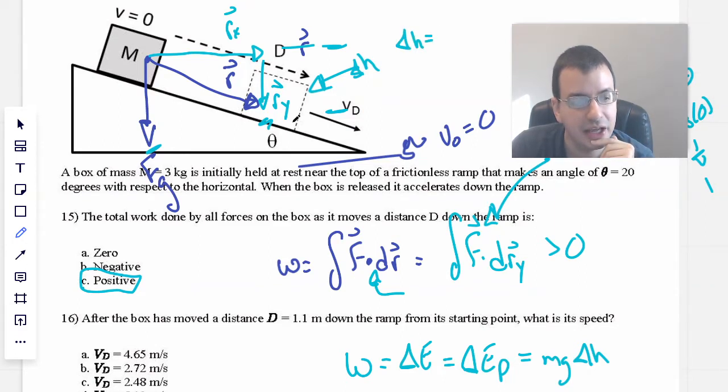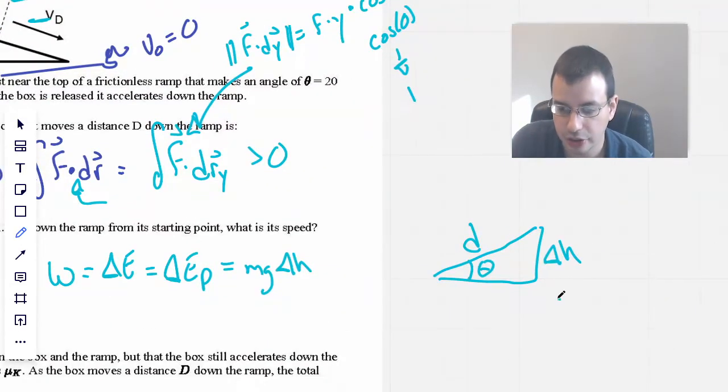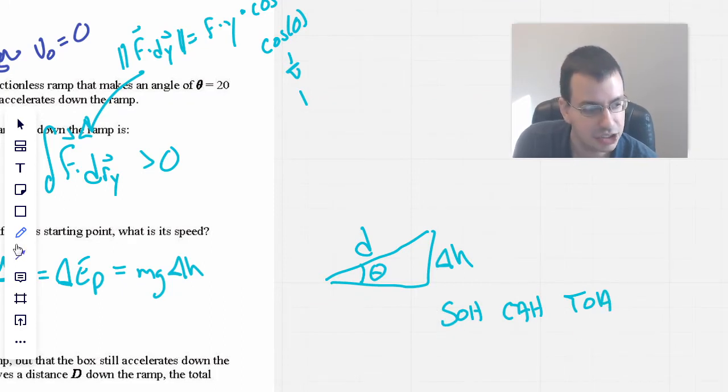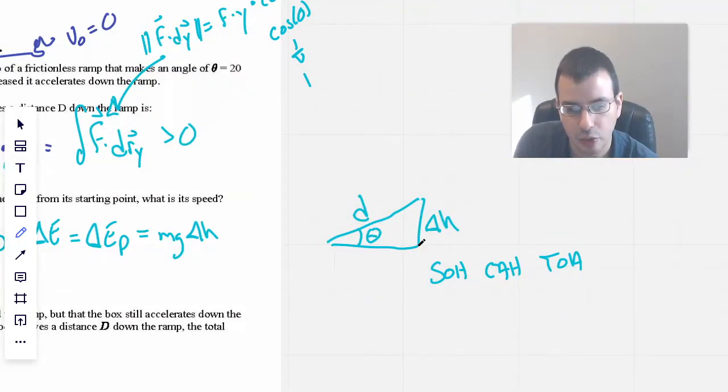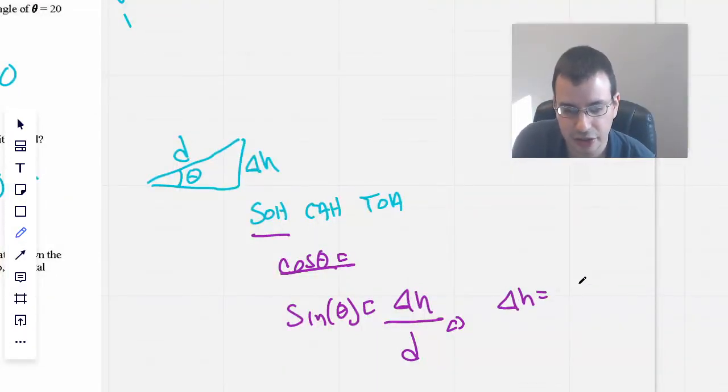Delta h is going to be, let's see here. If this is theta, we're going to call it sine of theta. So if we're looking at a triangle, we have d, this is delta h, and this is theta. We have SOHCAHTOA, a mnemonic to remember your trigonometric identities. And to find this height here, sine of theta equals opposite delta h over hypotenuse, which is d. Therefore, rearranging this, we'll find that delta h equals d sine of theta.